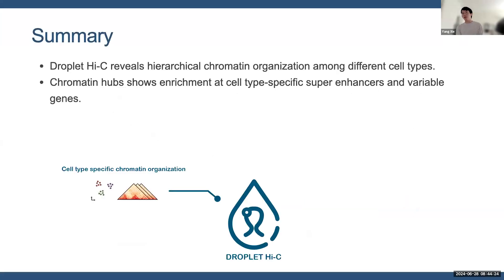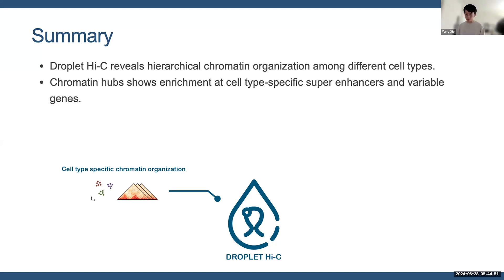As a quick summary of the first part: we have developed a 10X-based Droplet Hi-C, which can be used to explore cell type-specific chromatin interactions. By identifying chromatin hubs at 10 kilobase resolution, we show that these hubs are associated with cell type-specific marker genes as well as super-enhancers. This evidence suggests that our method is a convenient yet powerful one, and therefore we decided to use it to explore more about variation in chromatin structures.